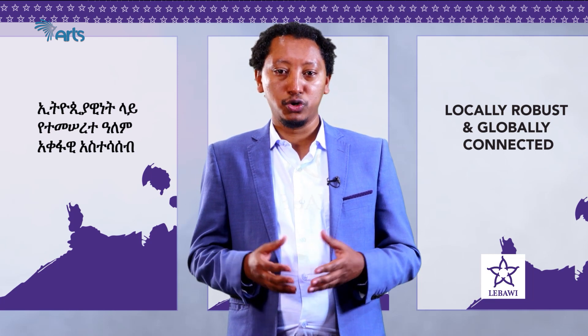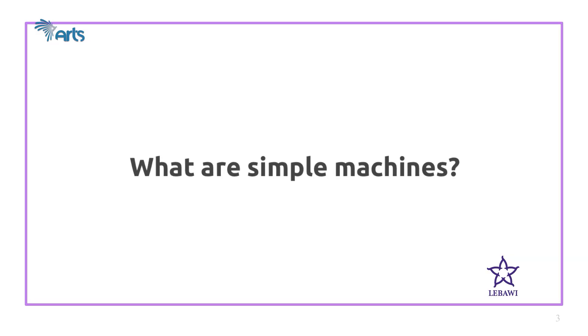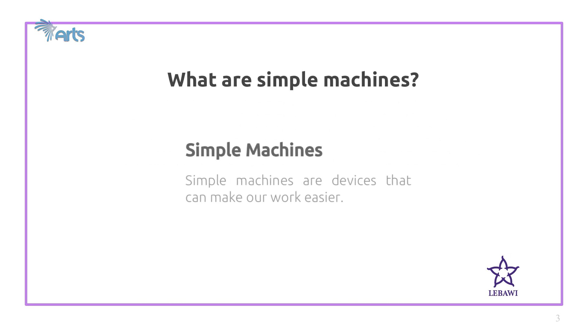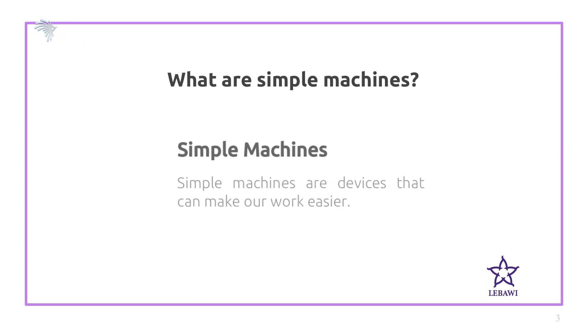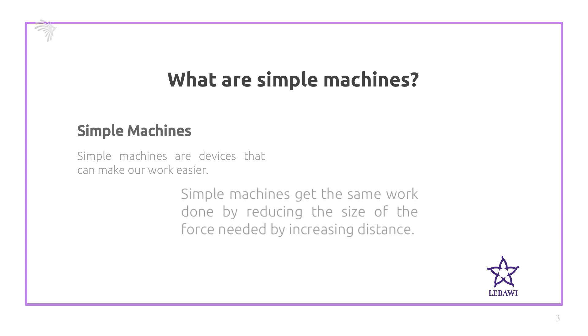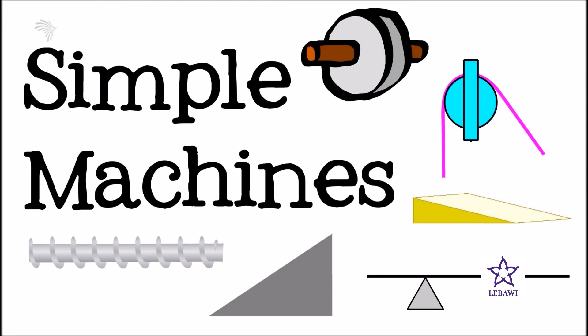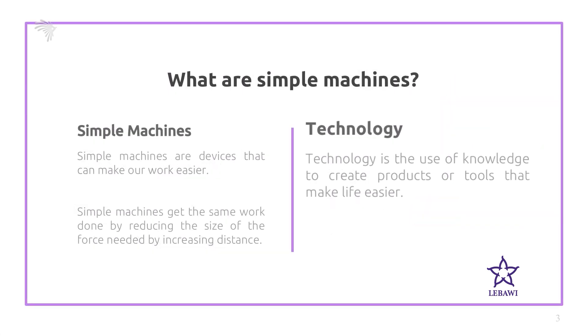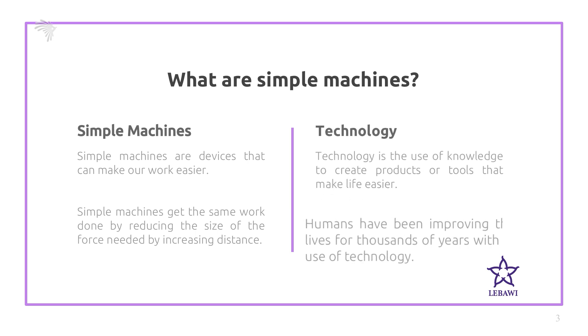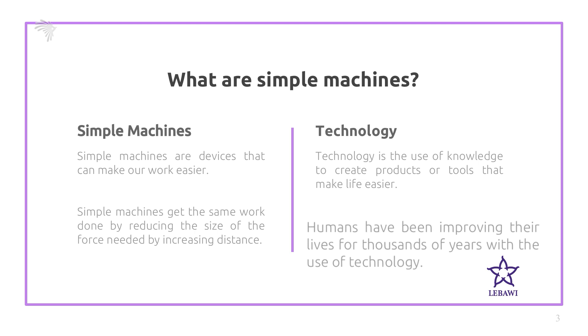Finally, we will try to integrate how these simple machines are applied or used to form or to make different types of furniture from Koso tree. Simple machines are defined as devices that can make our work easier. They get the same work done by reducing the size of force needed by increasing distance. Technology is the use of knowledge to create products or tools that make life easier, and humans have been improving their lives for thousands of years with the use of technology.